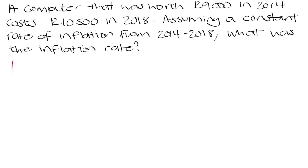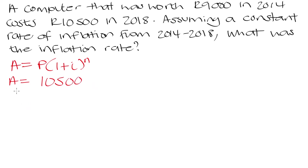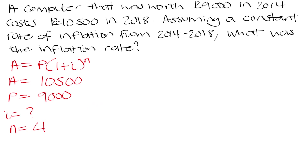Like our previous examples, let's write down the compound interest formula and identify the values we know. After those four years, the computer costs 10,500 rand — so A = 10,500. The initial price was 9,000 rand — so P = 9,000. Our i, the inflation rate, is what we're trying to calculate. And n = 4, because four years have passed between 2014 and 2018.